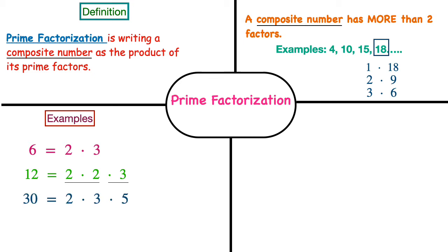Let's look at one more — the number 30. It has three prime factors: 2 times 3 times 5. Multiplying from left to right, 2 times 3 is 6 and 6 times 5 is 30. So here are three examples of composite numbers written in prime factorization form.